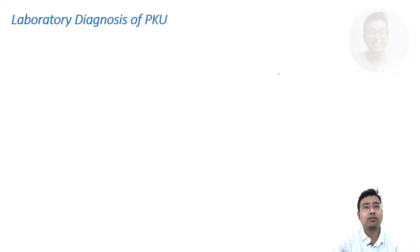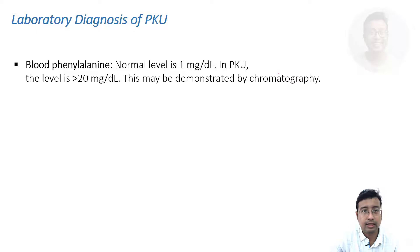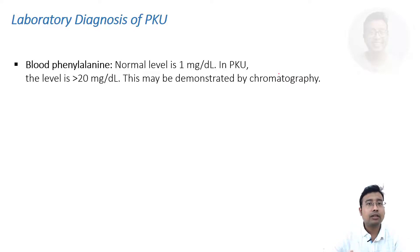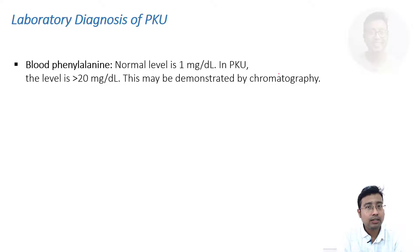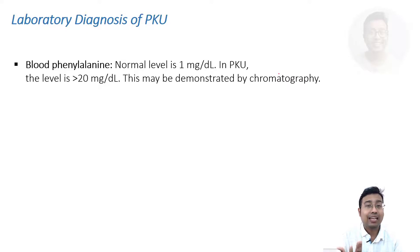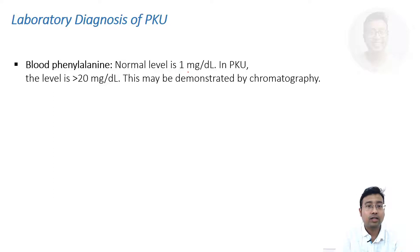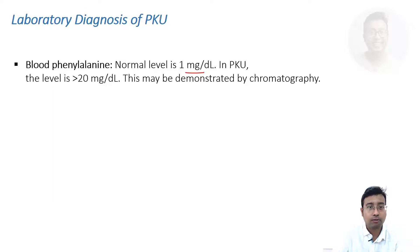Next, we should look at the laboratory diagnosis. As you already understood, phenylalanine cannot be converted to tyrosine, so there will be excess accumulation of phenylalanine in blood — more than 20 times what it should be. In normal cases, phenylalanine level is generally 1 mg/dL. But in phenylketonuria (PKU), it is more than 20 mg/dL.